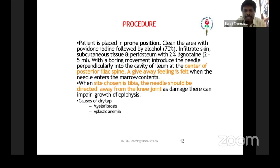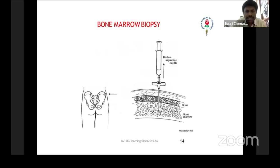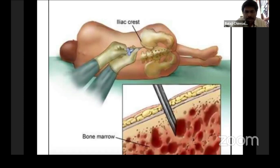The procedure: you put the patient in the prone position, identify the posterior iliac spine, and start going through with a screwing movement. There will be a giveaway feeling, which means you have entered the bone marrow. From there, you remove the stilet and use the syringe to draw the bone marrow material. You can also choose the tibia, but make sure the needle is directed away from the knee joint as it can damage the growth epiphysis. The site is the posterior superior iliac spine, or you can also do it in the tibia.